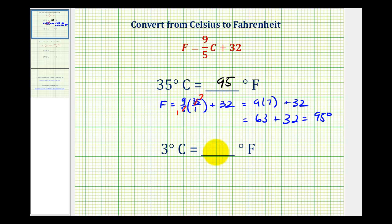Let's take a look at a second example. Here we want to convert three degrees Celsius to Fahrenheit. So we'll have F equals 9 fifths times three, or three over one, plus 32.